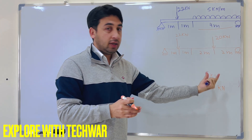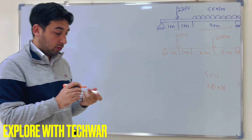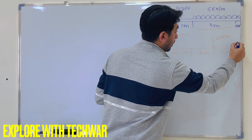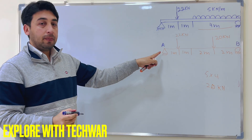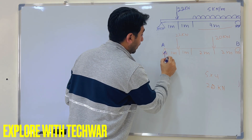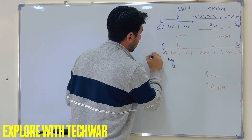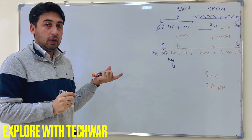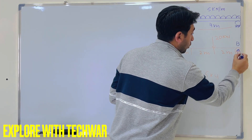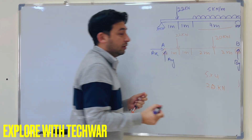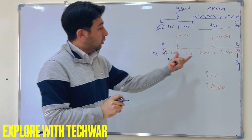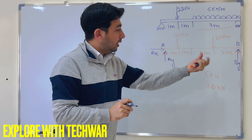Now we have a simply supported beam with 22 kilo Newtons and 20 kilo Newtons both acting downward. Let point A be the pin support and point B be the roller support. At point A there are two reactions: AX and AY, because it is a pin support. At point B, the roller support, there is only one reaction: BY. So we need to solve for three unknowns: AX, AY, and BY.